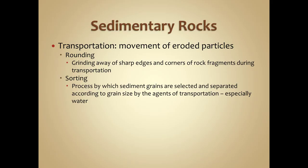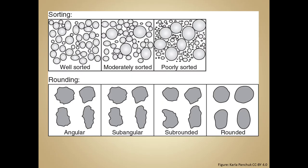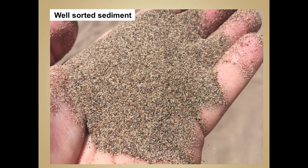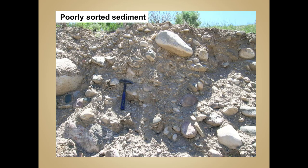Sorting is the process by which sediment grains are selected or separated out according to their various grain sizes depending on how they're being transported. For example, water will start to selectively deposit larger grain sizes first and finer grain sizes later as the current slows down. A well-sorted sediment means all grain sizes are basically the same, whereas a poorly-sorted sediment would be a hodgepodge of grain sizes from boulders to cobbles to silt to clay.